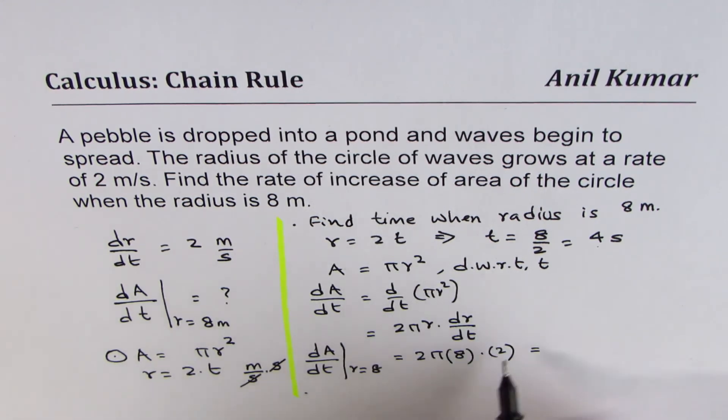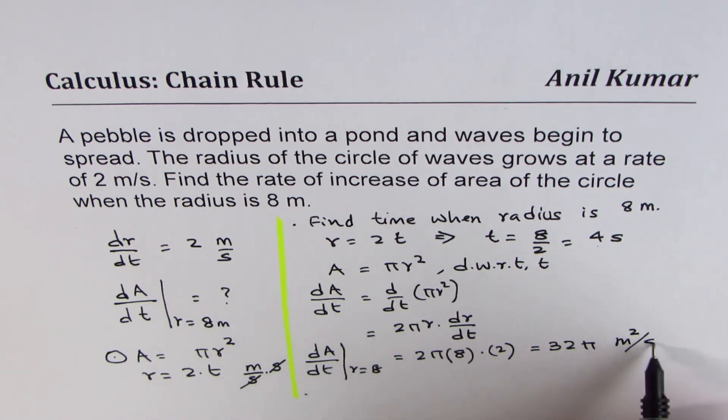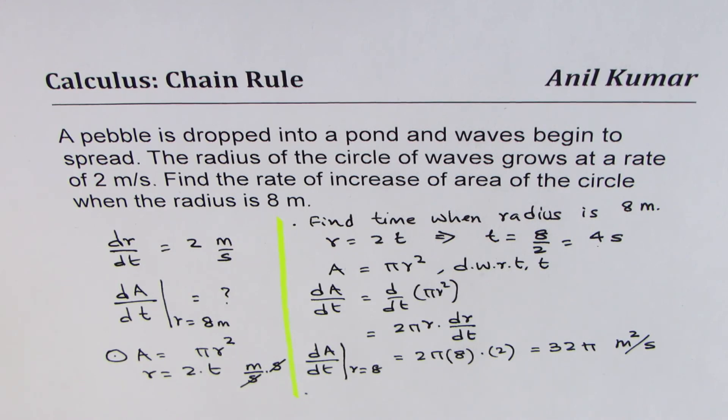So multiplying, we get 16 times 2, which is 32 pi. And area is, we are working with units of meters. Square is the area, per second is the unit. So that is how you would actually solve such a question.